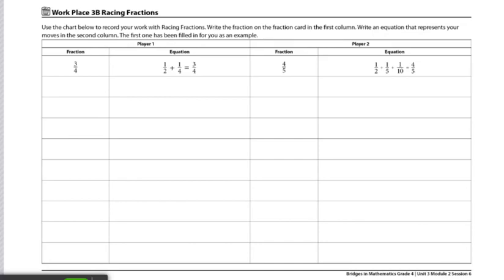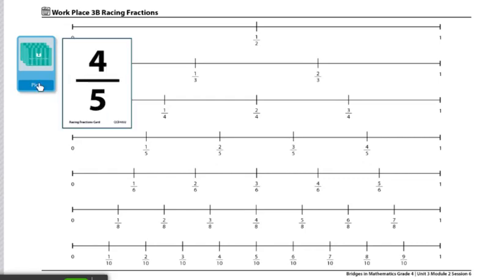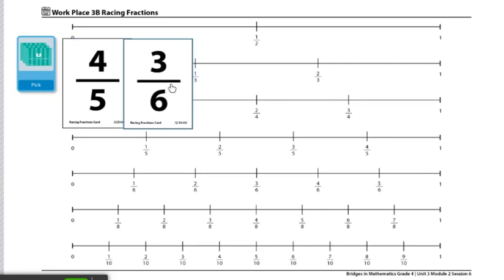Players will decide who will be red and who will be blue and place the game markers at the beginning of each line. Each player will draw a card and whoever has a larger fraction will go first. Player 1 has 4 fifths, and Player 2 has 3 sixths. 4 fifths is greater than 3 sixths, so Player 1 will go first.